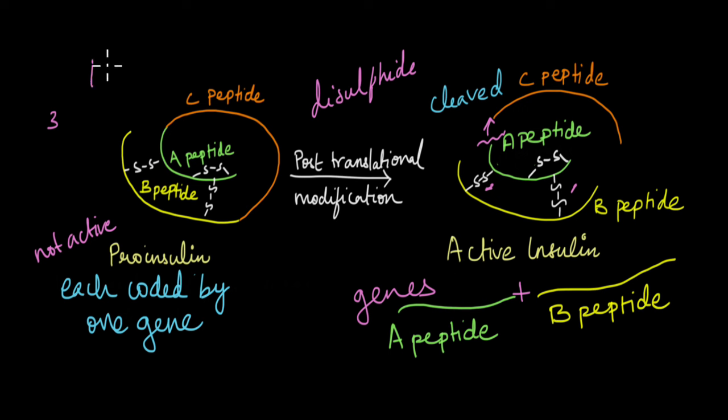In the 1960s, when all this was going on, the gene sequences for insulin, the A peptide, the B peptide, and even the C peptide, the gene sequences were not known. They knew just the protein sequences, but not the gene sequences.